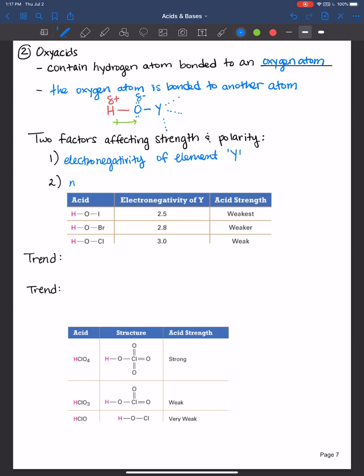And also the number of oxygen atoms attached to Y. Oxygen is pretty electronegative, and so let's look at the figures here. This figure is showing oxyacids where element Y is a halogen, and so the only thing that's really changing here is the type of element Y and its electronegativity. If we looked at the electronegativity value of iodine, bromine and chlorine, you can see them here.